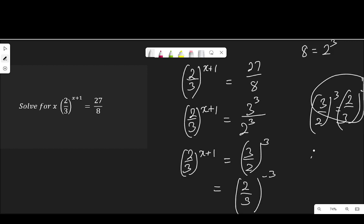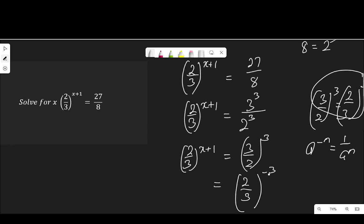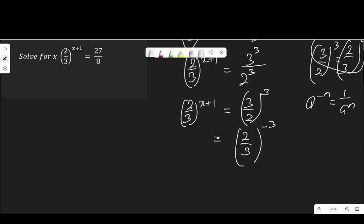From the law of indices, a to the power of negative n is 1 over a to the power of n. That is the law I applied there. So here I have 3 over 2. To turn it to 2 over 3, that is the reciprocal. I have to raise the power to the negative. The power has to be negative.